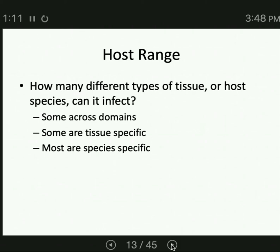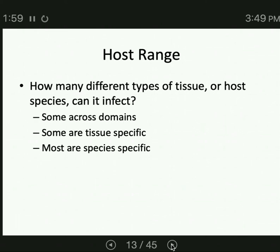How many different types of tissue or host species a virus infects depends upon the proteins it uses to bind to the host. A virus has protein fibers and protein spikes it uses to bind to the host. The protein spikes and fibers on the virus have to match up with some protein on the cell. Wherever the virus finds its match, that's a cell it can infect. If the host cell protein that can bind with the virus's protein spikes is only found in one tissue type, then the virus can only infect one tissue type. If it's only found in one species, the virus can only infect one species.